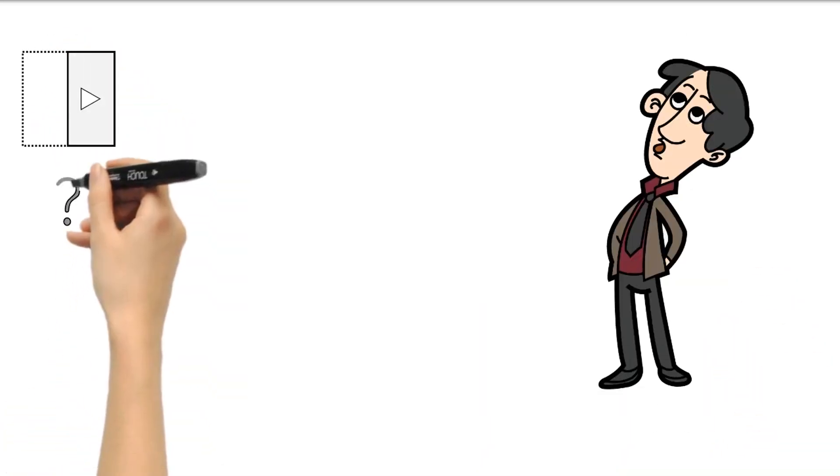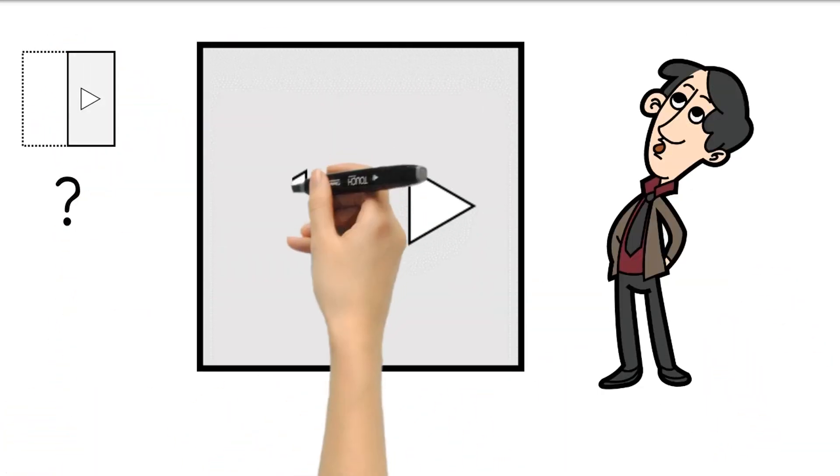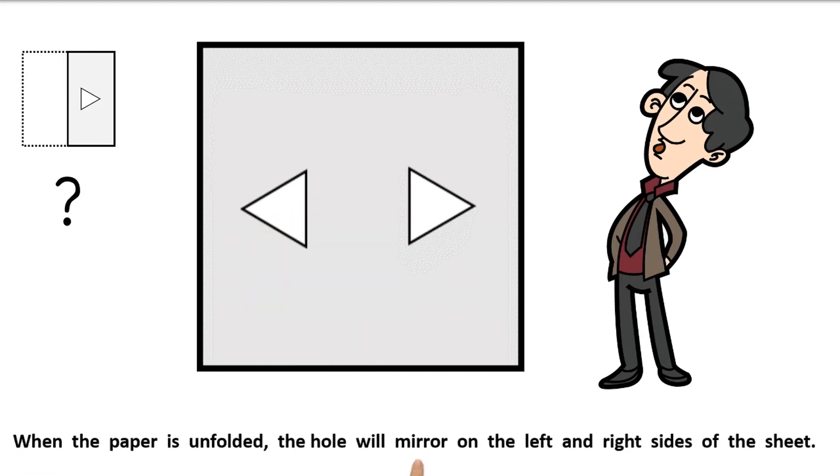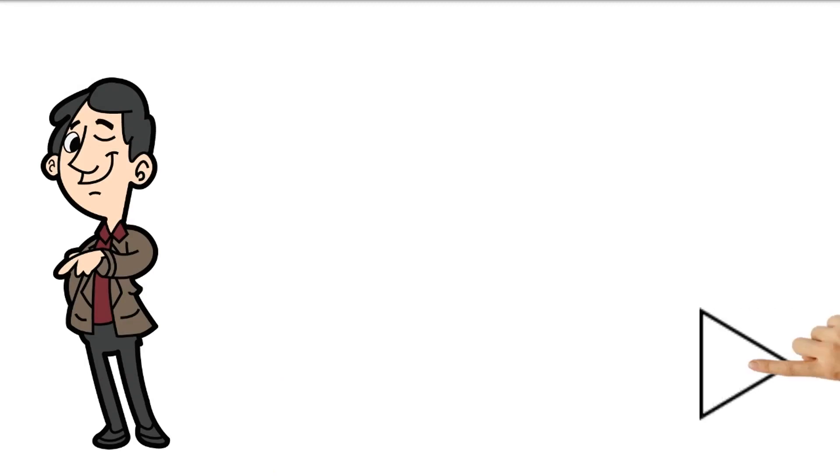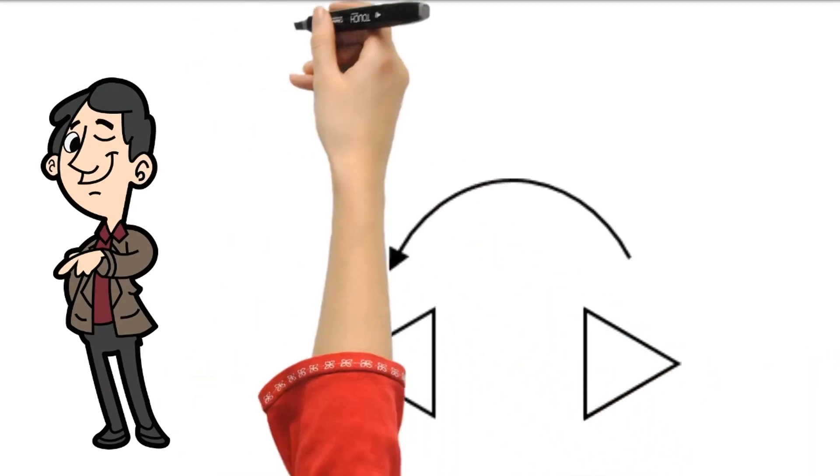When the paper is unfolded, the holes will mirror on the left and right sides of the sheet. Pay attention, the triangle will be flipped horizontally.